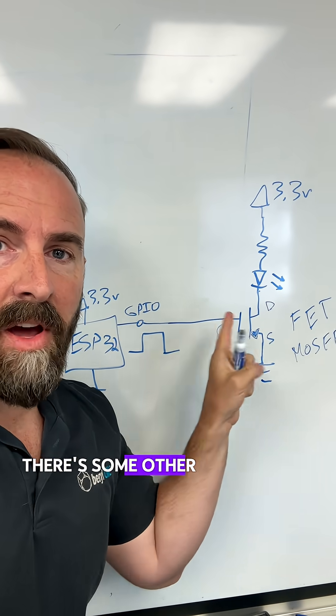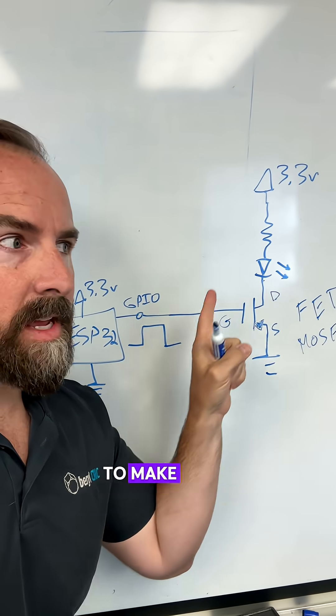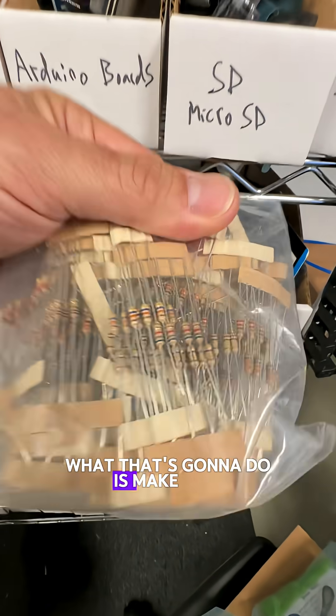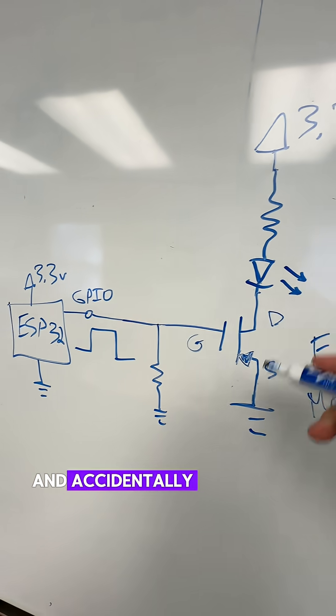That brings us to the ugly. There's some other components we have to add to this circuit to make this a little bit more reliable. We're going to play it safe and add a pull-down resistor here to ground. What that's going to do is make sure this gate doesn't float around and accidentally turn on.